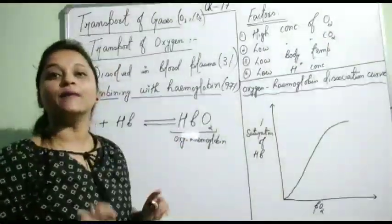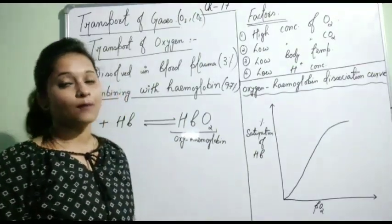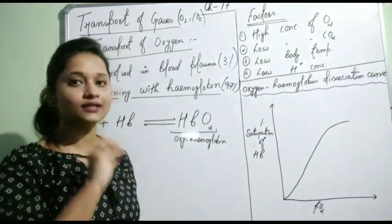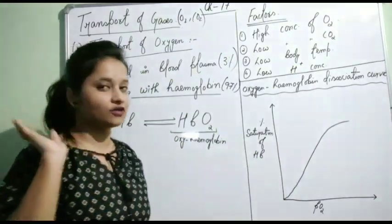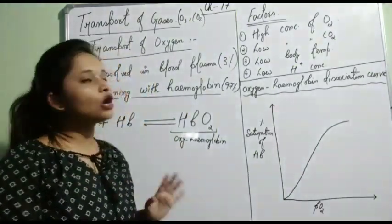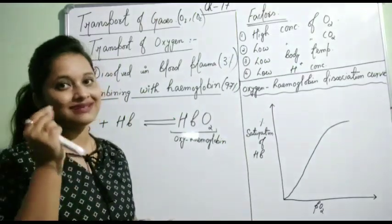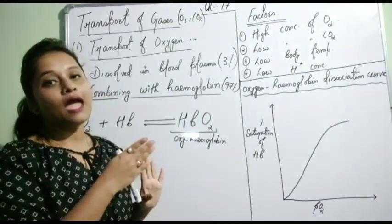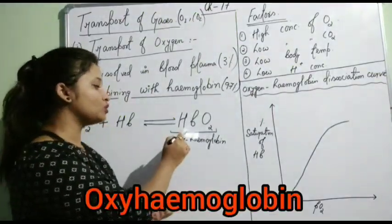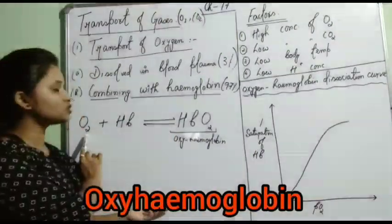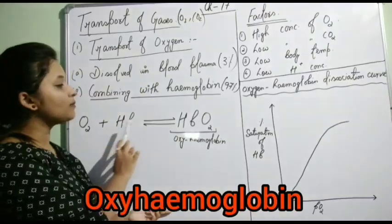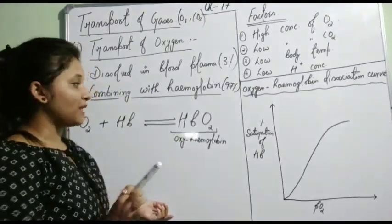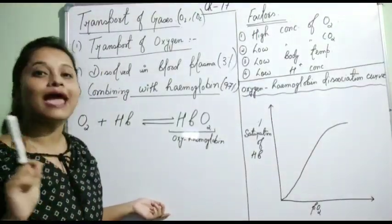The rest — 97% of oxygen — is transported by combining with hemoglobin. Hemoglobin is a red blood pigment present in RBC. Hemoglobin binds with oxygen and forms a complex known as HbO2, that is oxyhemoglobin. So oxygen plus hemoglobin forms HbO2 — oxyhemoglobin — which is the complex formed by the combination of oxygen and hemoglobin.